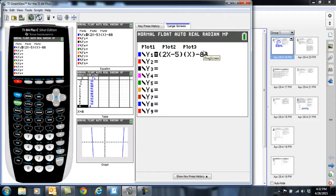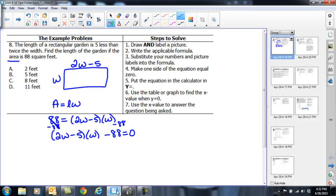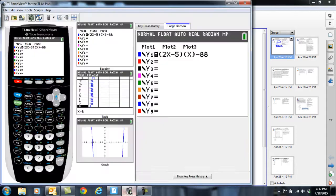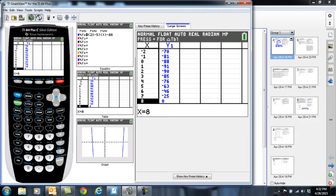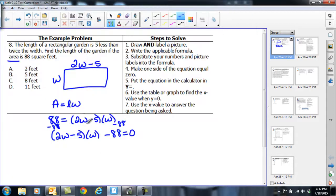Get that typed into your calculator, and then the next step says to use the table or the graph to find the X value when Y equals zero. So let's try the table first. I'm going to go to second graph, and I have scrolled down in my table. Hopefully you can scroll down in yours, and you should see that when X equals eight, Y equals zero. So I found my value.